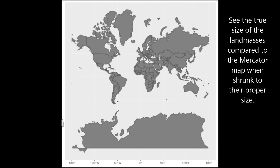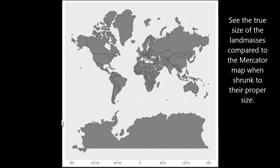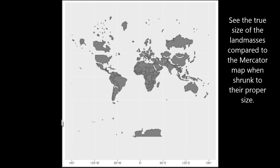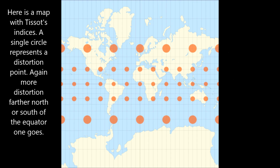See the true size of the land masses compared to the Mercator map when shrunk to their proper size. Here is a map with Tissot's indicatrix. A single circle represents a distortion point. Again, more distortion occurs farther south and north of the equator one goes.